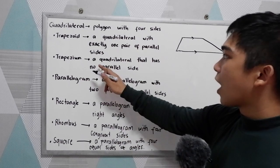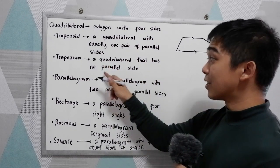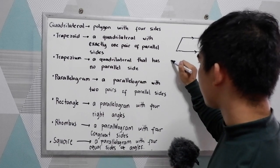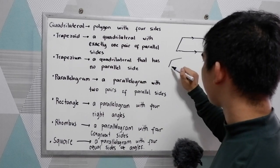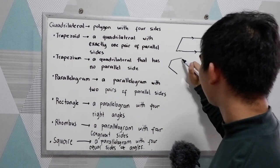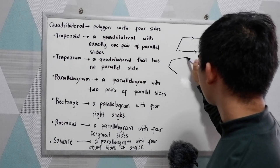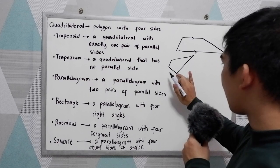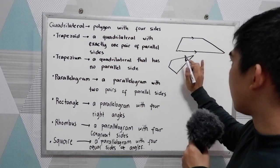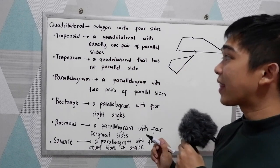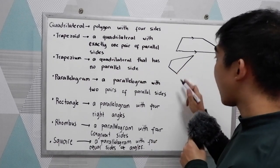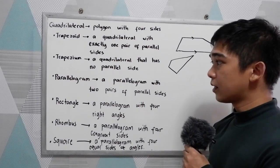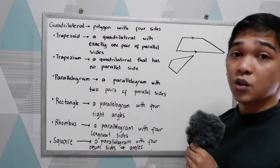Next, trapezium — a quadrilateral that has no parallel sides. So if we're going to draw a trapezium, it can be like this one. Notice in our diagram or illustration, there is no parallel sign in our trapezium.